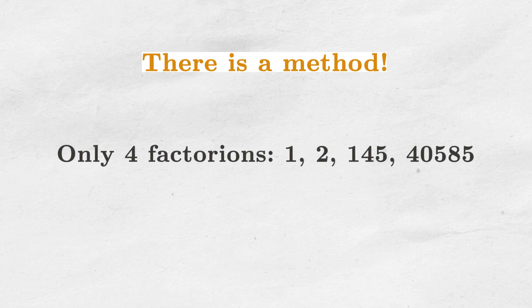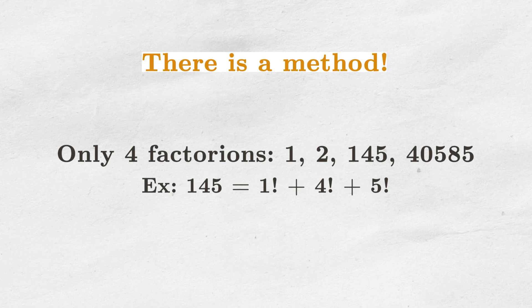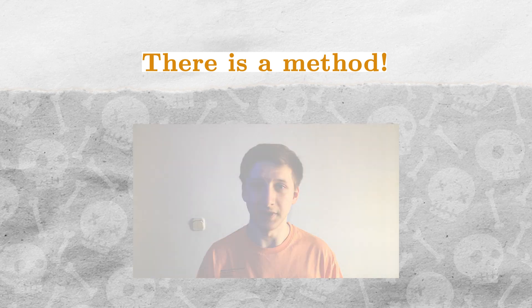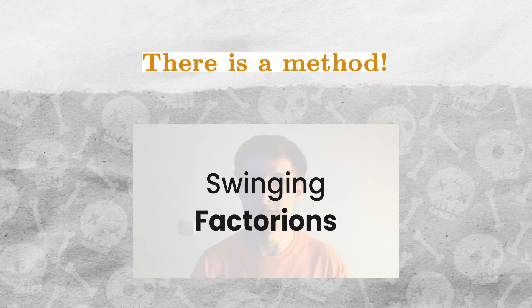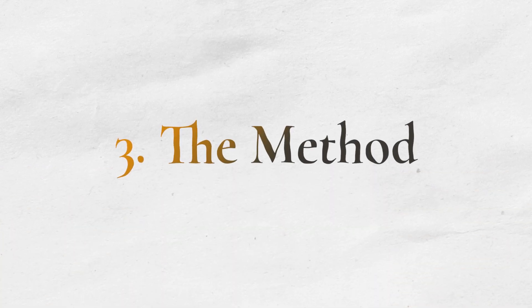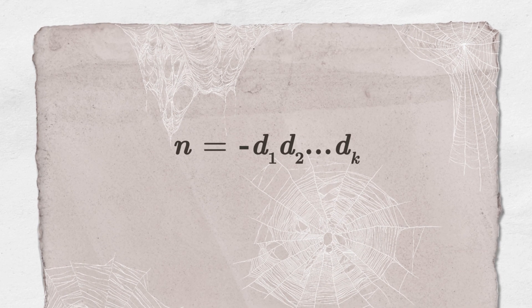For example, it is used to prove that there are only 4 factorions, which are the numbers equal to the sum of factorials of their digits. I've covered the proof of a very similar fact in this video, so if you're curious, go check it out. Ok, now let me show you how the method goes. Suppose that n is negative and consists of digits d1 to dk.